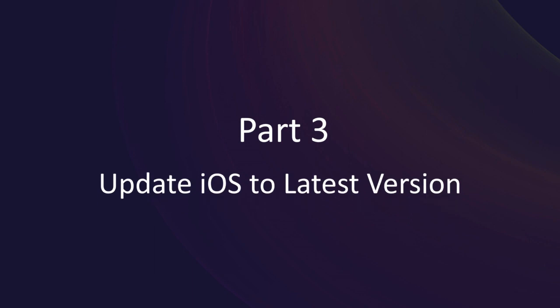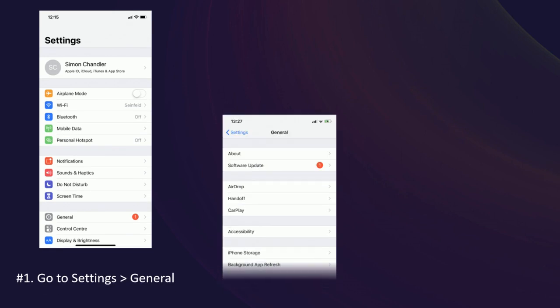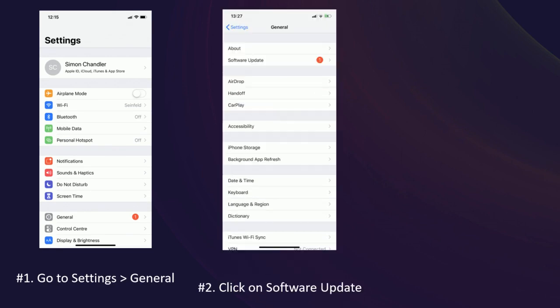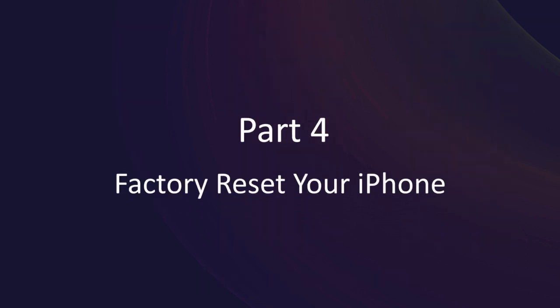Part 3: Update iOS to the latest version. Step 1: Go to Settings and click on General. Step 2: Click on Software Update. Step 3: Tap Download and Install.